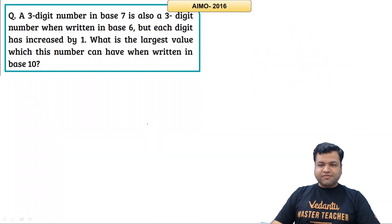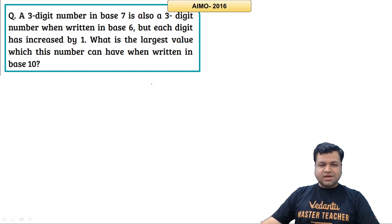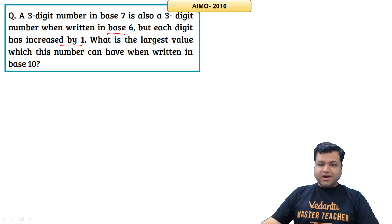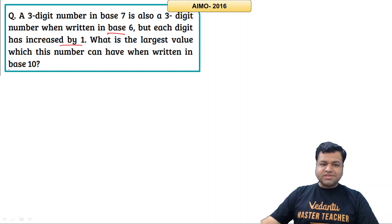This is the first question, from AIMO 2016. The question says that a three-digit number in base 7 is also a three-digit number when written in base 6, but each digit is increased by 1. What is the largest value this number can have when written in base 10?